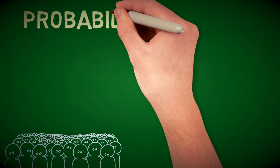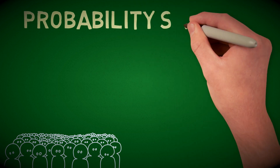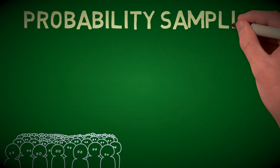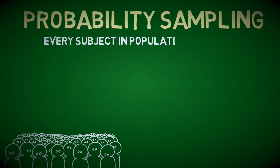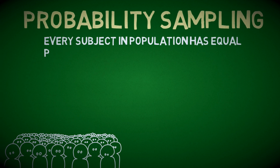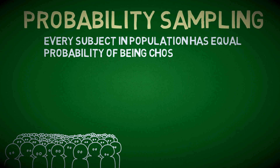Simple random sampling is a probability sampling procedure, meaning the researcher would need to guarantee equal probability. In other words, every subject in the population should stand the same chance — equal probability — of being chosen as the sample.